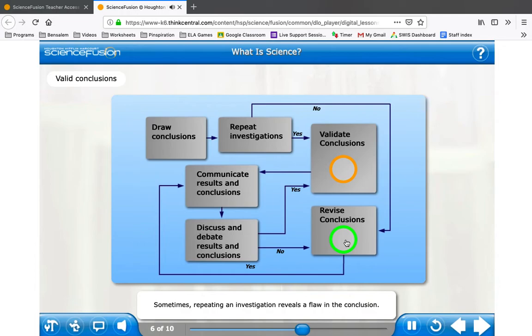Sometimes, repeating an investigation reveals a flaw in the conclusion. When this happens, a scientist revises or changes the conclusion. The revised conclusion is then discussed and debated. This new conclusion may be validated if the evidence is trustworthy.